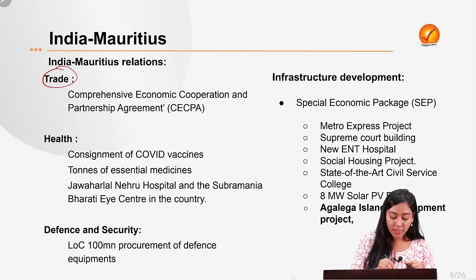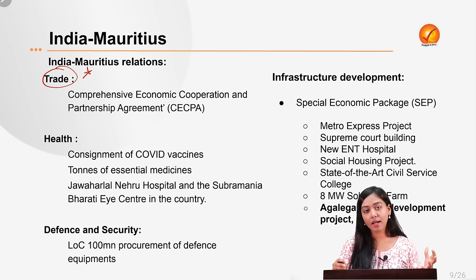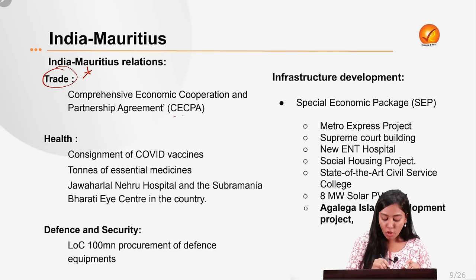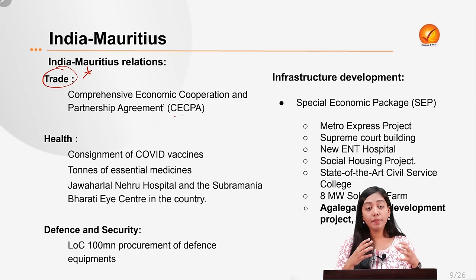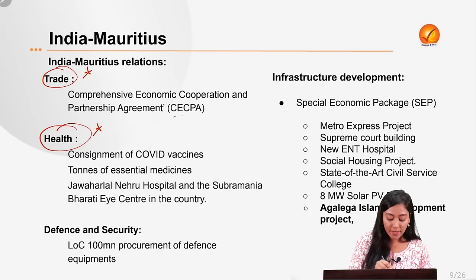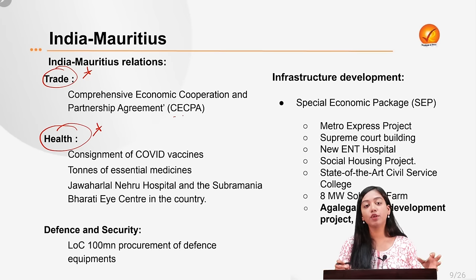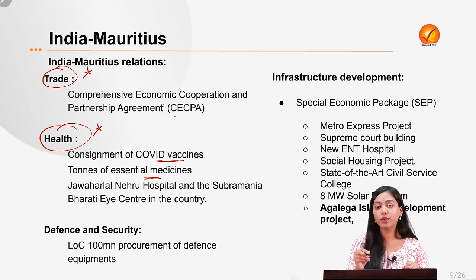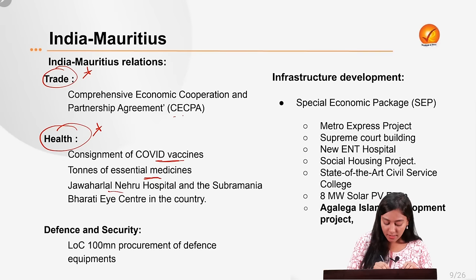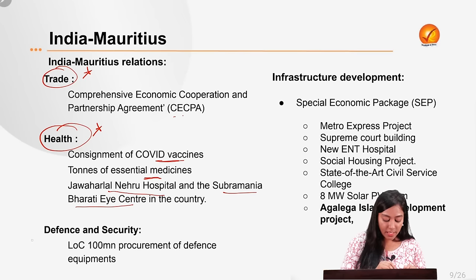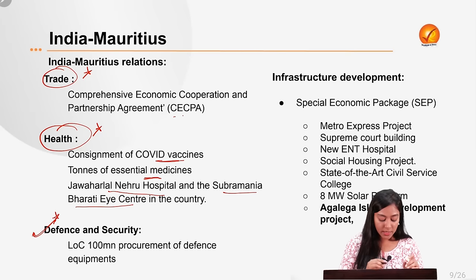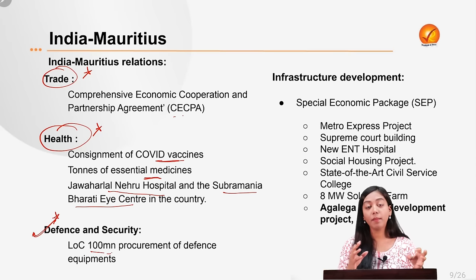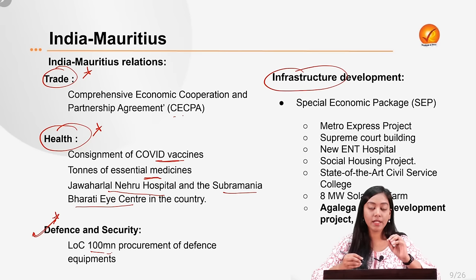Evaluating India-Mauritius relations: in trade, Mauritius is the first African country with which India signed a free trade-type agreement — the Comprehensive Economic Cooperation and Partnership Agreement (CECPA) — making India the largest trading partner of Mauritius. In health, India has provided thousands of consignments of COVID vaccines, essential medicines, and helped establish health infrastructure including the Jawaharlal Nehru Hospital and Subramanya Bharati Eye Center in Mauritius.